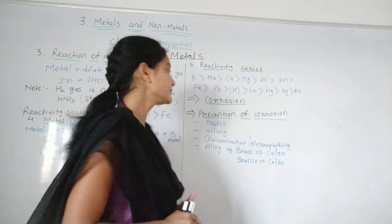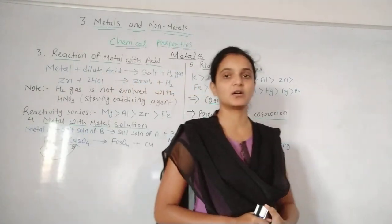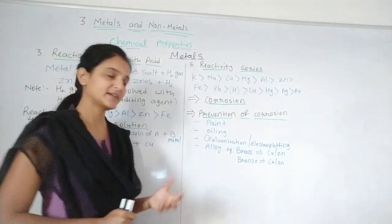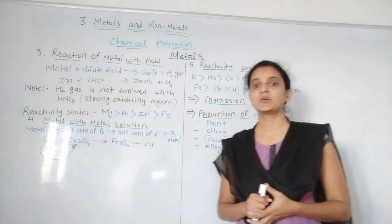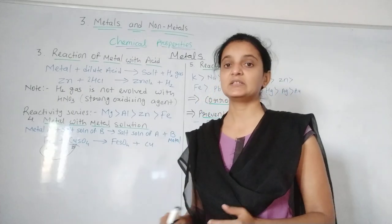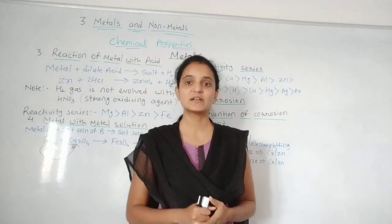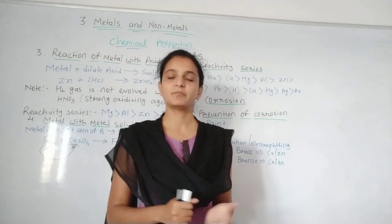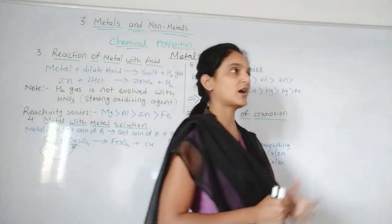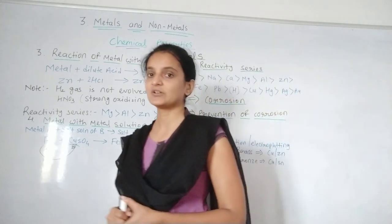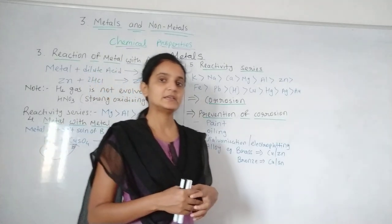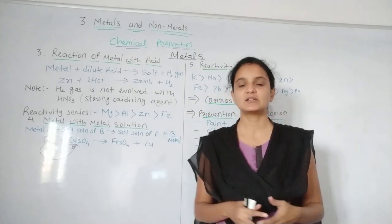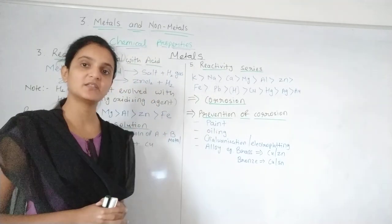The reactivity series is given in your Class 8 Cordova textbook. The next topic in this chapter is corrosion. Corrosion is not a new topic — we studied it in the first chapter. Corrosion means when a metal comes in contact with oxygen, it reacts and forms its oxide, which is called rust. A common example is the rusting of iron — iron rods, iron doors — which is a very slow process because iron's reactivity towards oxygen is quite low.